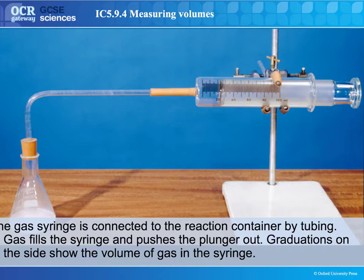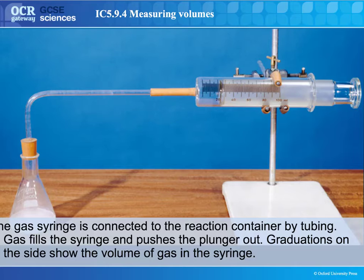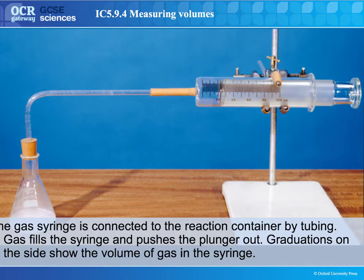The gas syringe method of measuring a gas is pretty much the best one. It directly measures the volume of gas in cubic centimetres that's produced. The two major problems are that it's sometimes difficult to get the bung into the flask without gas escaping, and you need to make sure the gas syringe is airtight. Small gases like hydrogen might possibly escape, and it's also limited to 100 cubic centimetres in terms of the amount you can measure.